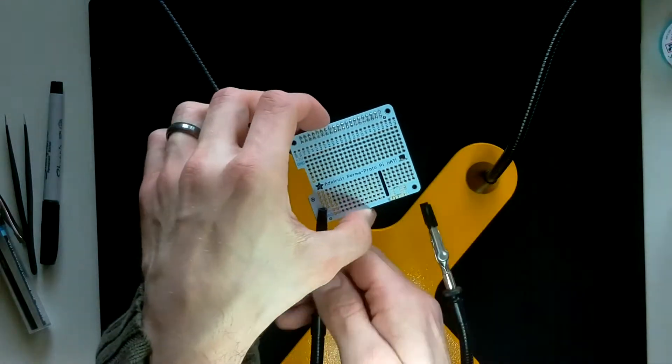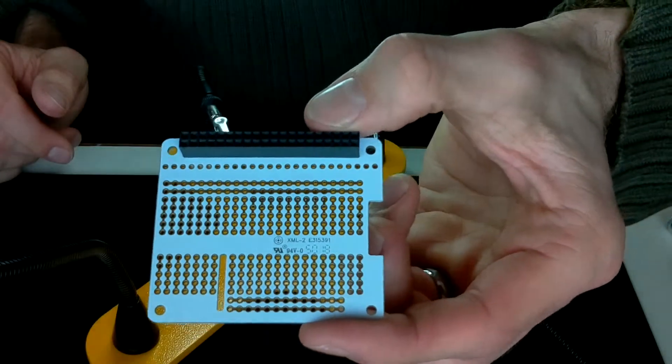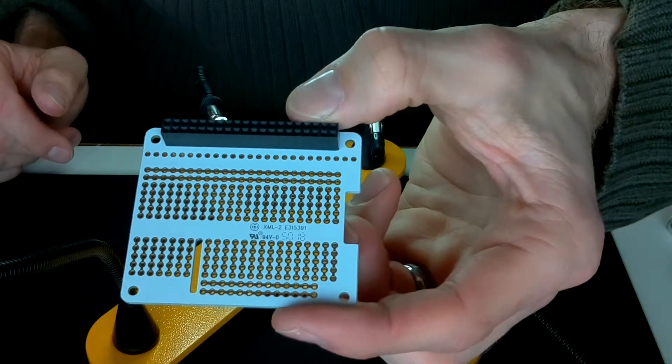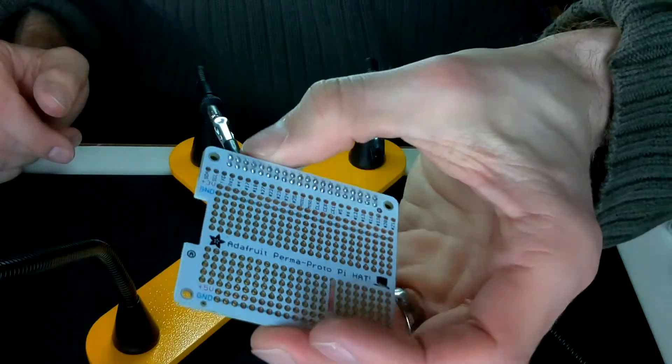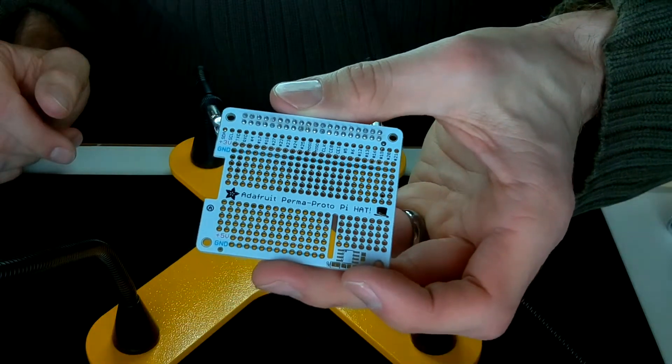Then I'll remove the proto hat from the jig. Do a final inspection to make sure I got it right. All the solder joints look like they have about the right amount of solder and that's it. Thanks for watching.